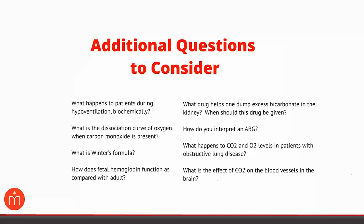That was a lot to consider. For further exploration, consider: what happens to patients who are hypoventilating or hyperventilating, and what drugs trigger hypoventilation? What other factors shift the hemoglobin-oxygen dissociation curve, such as carbon monoxide? How do we interpret an ABG? What drug helps dump excess bicarb in the kidney? What is the effect of CO2 on brain blood vessels? These are key high-yield points spanning multiple systems.